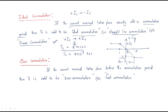Next is over commutation. What is the meaning of over commutation? The current reversal takes place before the commutation period. In order to understand this I will give another analysis. We have plus IC and minus IC, and this is known as the commutation period TC.